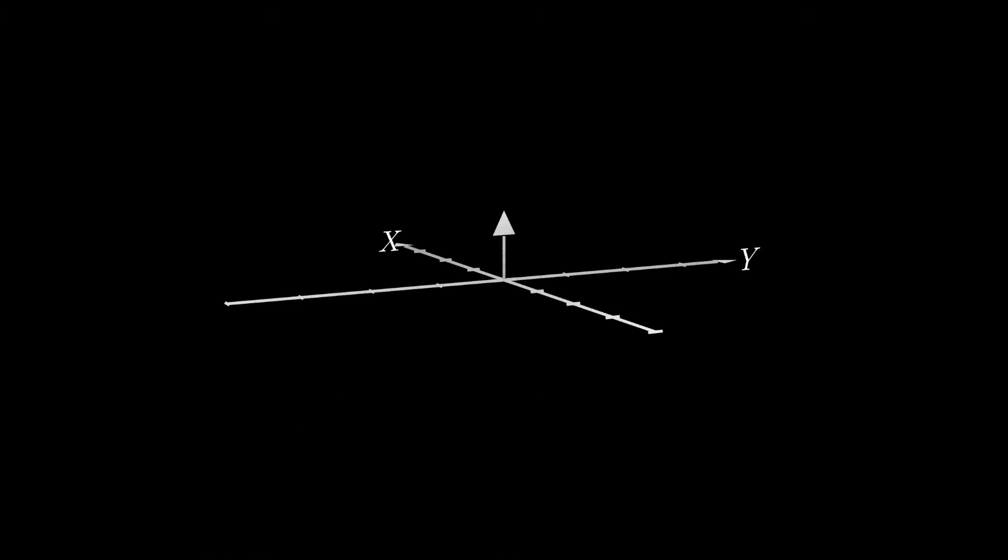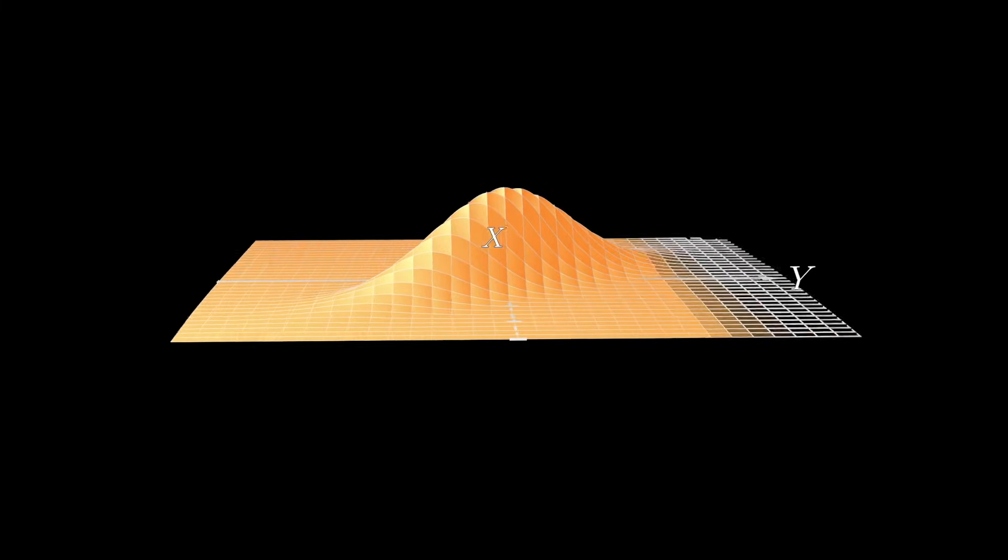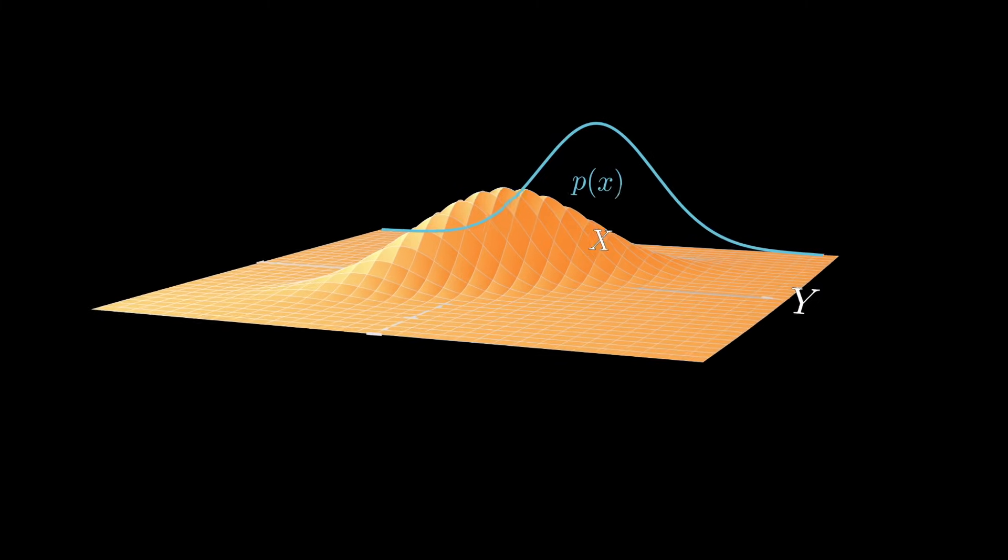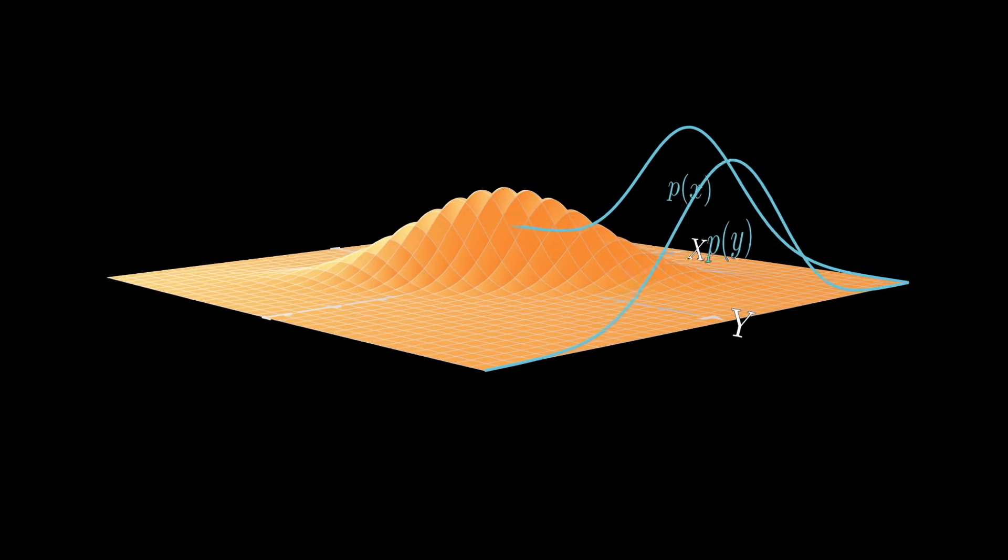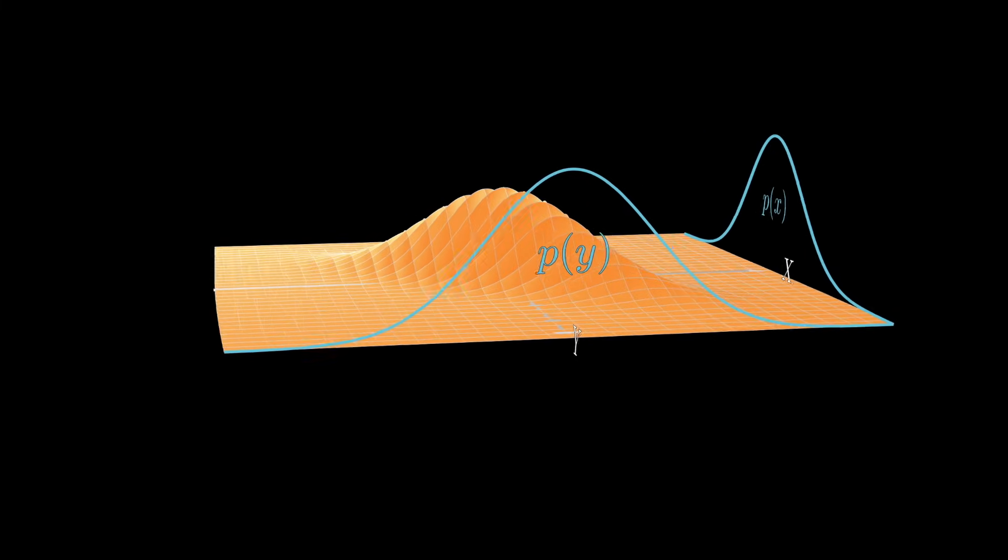In the continuous setting, it's a little bit harder to visualize things, but conceptually it's the same. This orange surface represents a joint probability density function over x and y. If we were to separately integrate this pdf over its two axes, we would get two probability density functions representing the marginals p of x and p of y.